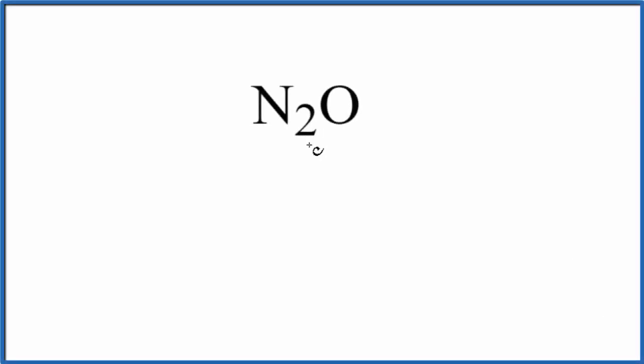In this video we'll draw the resonance structures for N2O. This is dinitrogen monoxide, also called nitrous oxide. Let's first count up the electrons then draw some resonance structures. Nitrogen is in group 15, sometimes called 5A, with 5 valence electrons. We have two nitrogen atoms. Oxygen is in group 16, so we have 6, for a total of 16 valence electrons for this N2O Lewis structure.